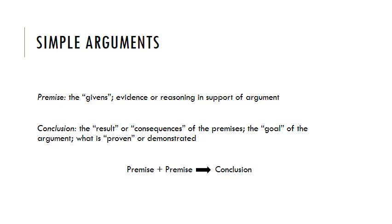And then there's the conclusion — that's the claim, that's what you're trying to prove. The conclusion should be the result or the consequences of the premises. That's what makes a good argument: when the conclusion necessarily follows from the premises. The conclusion is what you're trying to prove, what you're trying to demonstrate — the goal of your argument. So when we have a series of premises that work together, they lead to a conclusion.